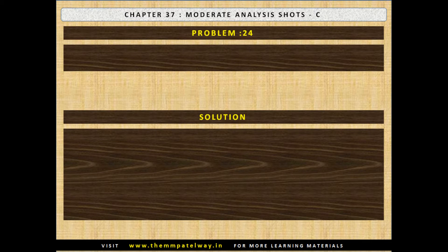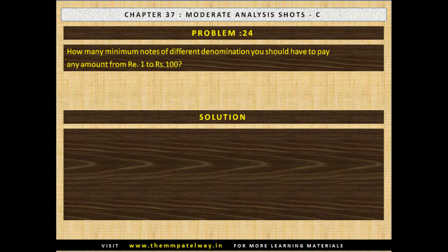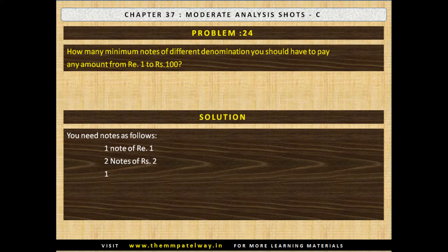Problem No. 24. How many minimum notes of different denominations should you have to pay any amount from Rs. 1 to Rs. 100? The solution: you need 1 note of Re. 1, 2 notes of Rs. 2, 1 note of Rs. 5, 2 notes of Rs. 10, 1 note of Rs. 20 and 1 note of Rs. 50.